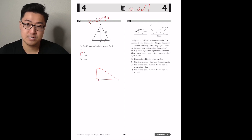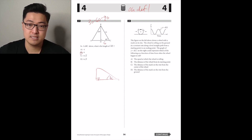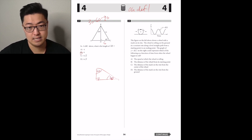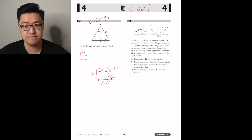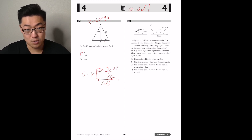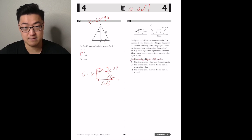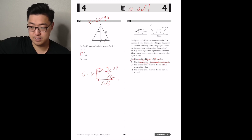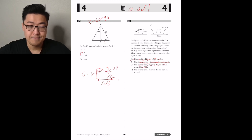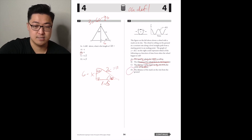The figure on the left shows a wheel with a mark on its rim rolling on the ground at a constant rate along a level straight path. The graph of y equals d of t could represent which of the following as a function of time? It's a level straight path so it's not accelerating. The distance of the mark from the ground — that changes as the wheel rotates. Answer D.